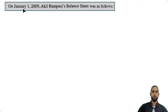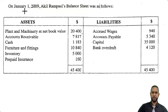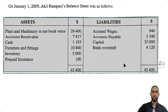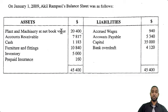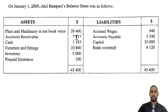So they tell us that on January 1st, 2009, Akhil Rampal's balance sheet was as follows. We have a very strange-looking balance sheet here. This is the old horizontal format, but it's not in proper order. You start off with plant and machinery, then we have accounts receivable, cash, furniture and fittings, inventory, prepaid insurance. So at least the assets are on one side and liabilities and capital are on the other side, but of course this is not in proper order.